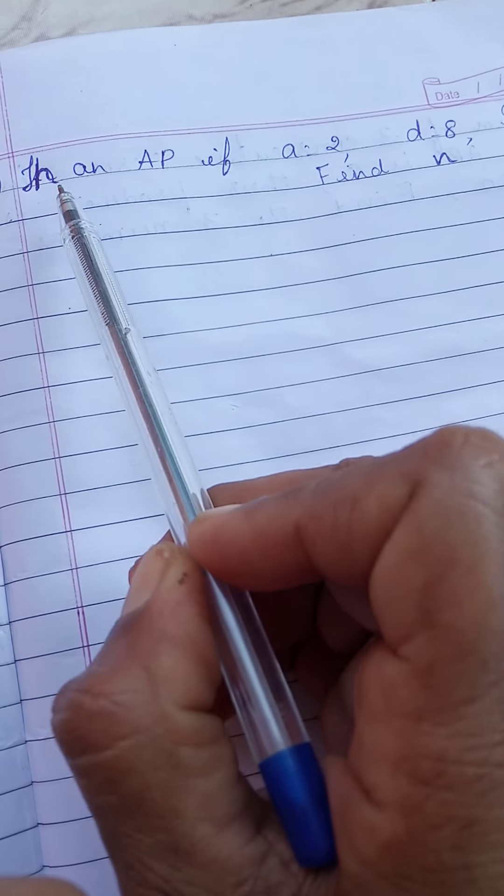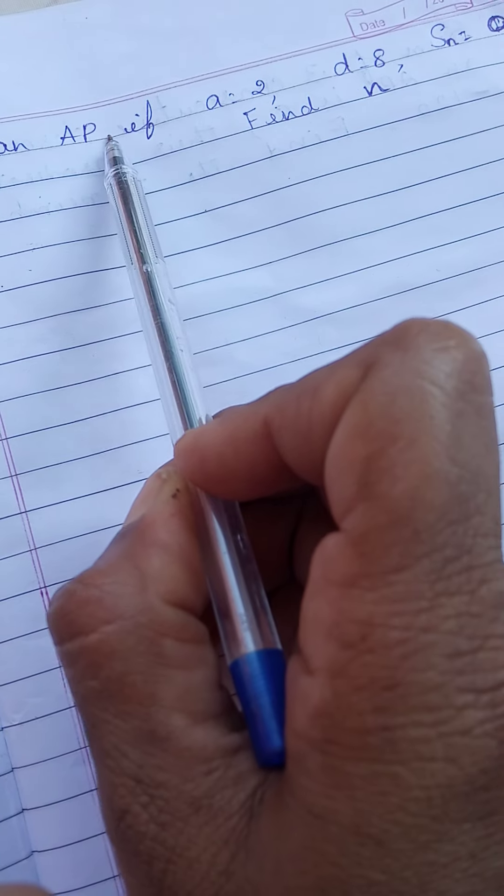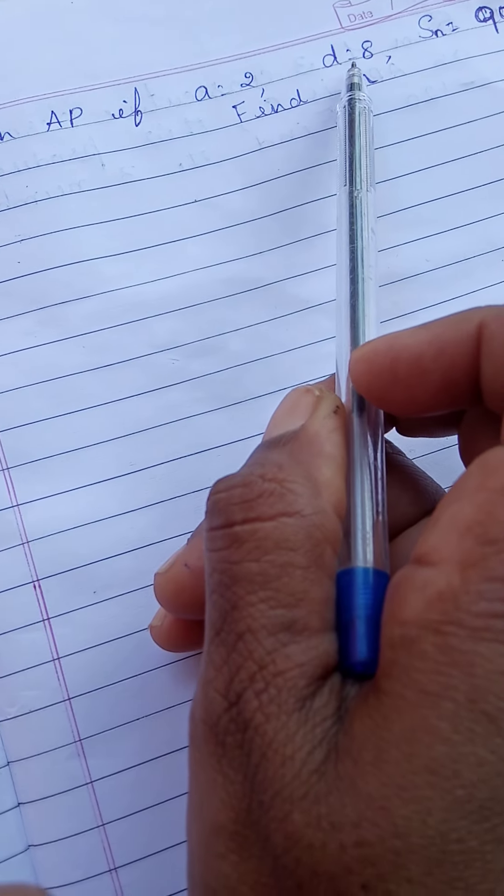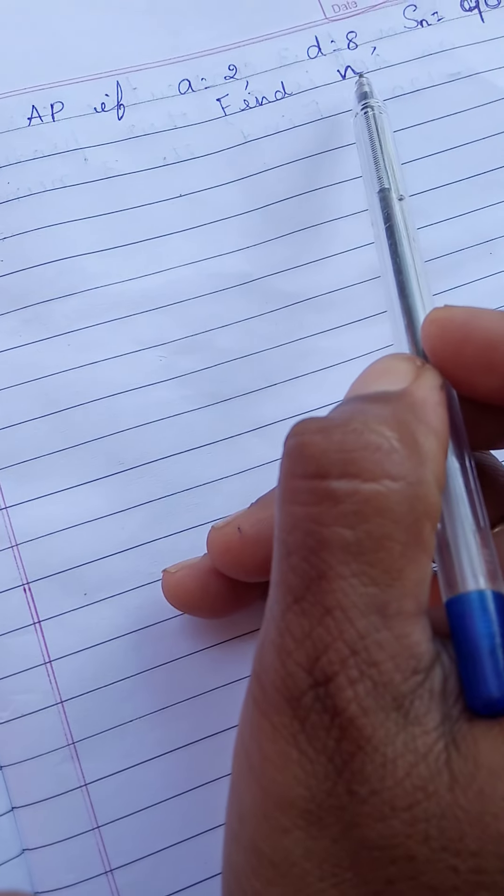Hello children, today I will solve one more problem in AP. In an AP, if A is 2, D is 8, Sn is equal to 90, find the n.